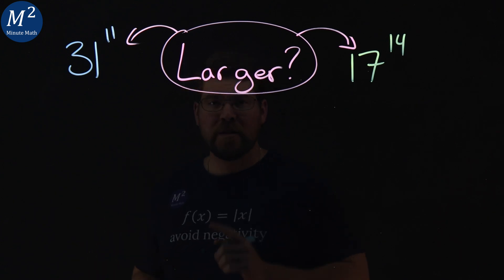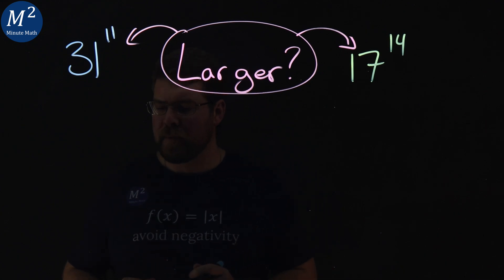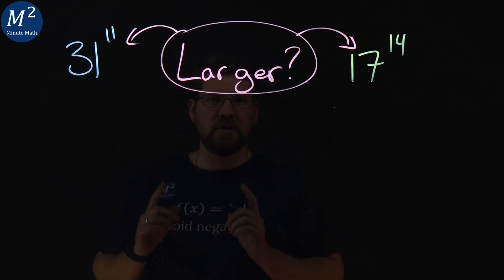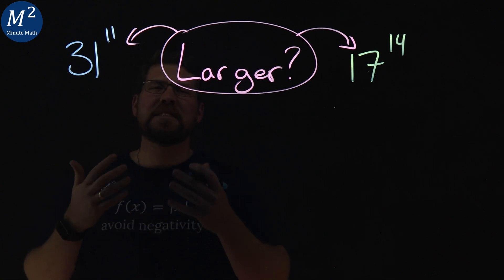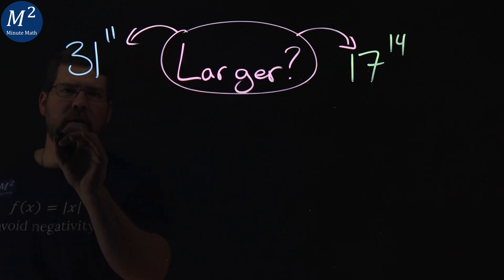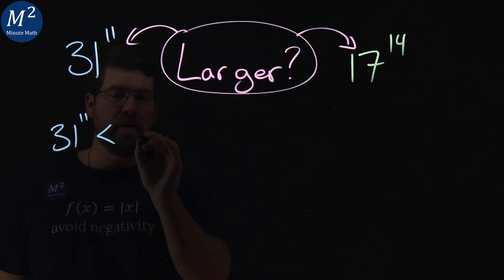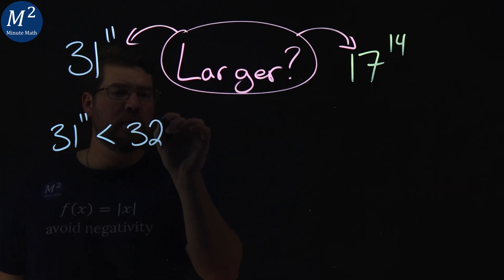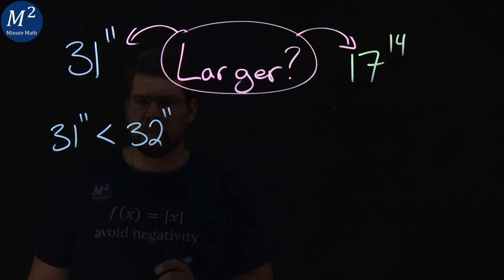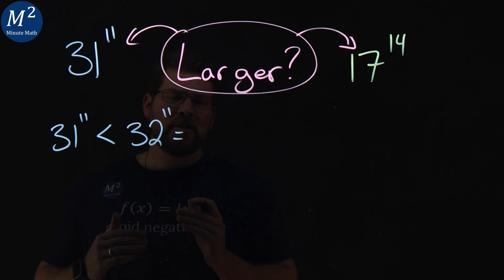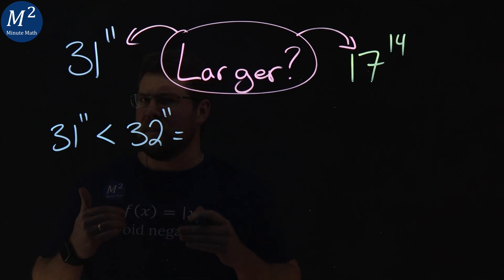Let's start with 31 to the 11th power. I don't have time to multiply that whole thing out, but what I can do is understand the number itself. 31 to the 11th power is going to be less than 32 to the 11th power. Now, 32, I'm going to rewrite that out to be 2 to the 5th power.